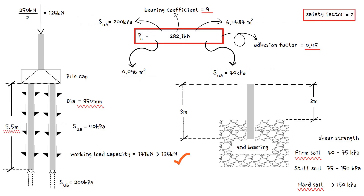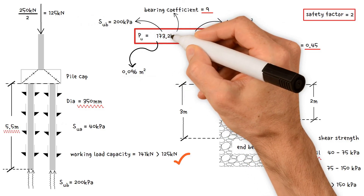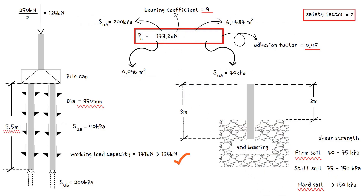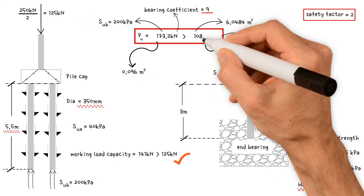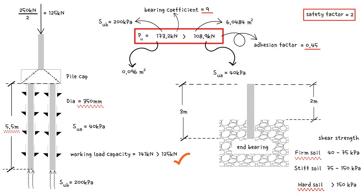Note that the base bearing capacity of 173.2 kN exceeds the skin friction capacity of 108.9 kN. If the pile was made longer, it would penetrate the hard soil zone, with a consequent increase in capacity and proportion of skin friction to base bearing ratio.